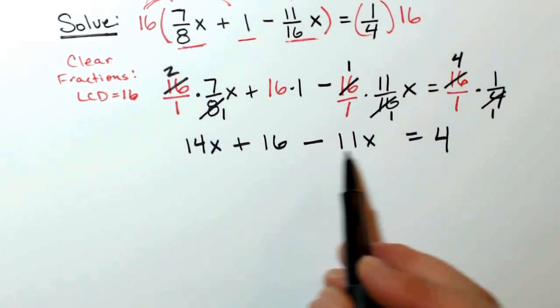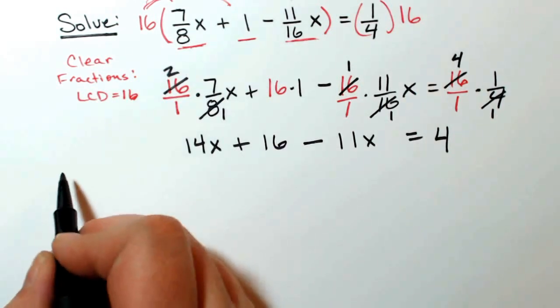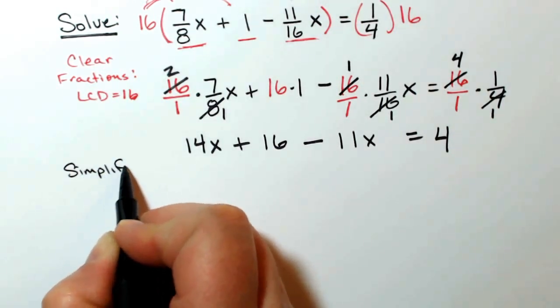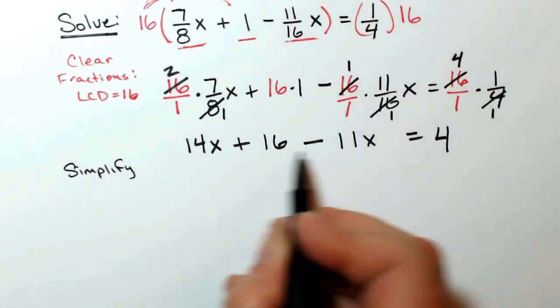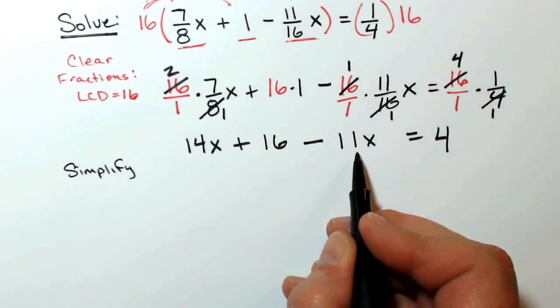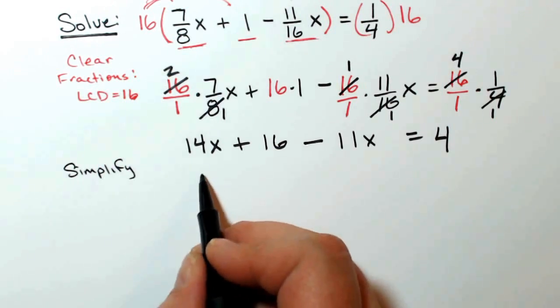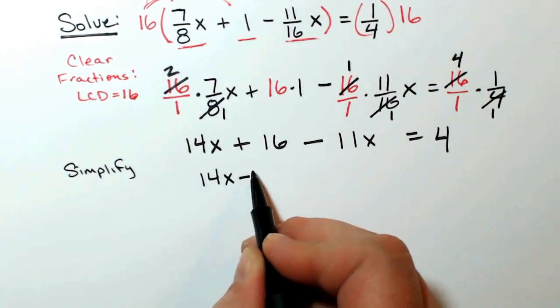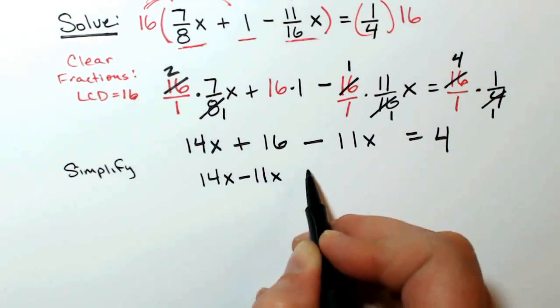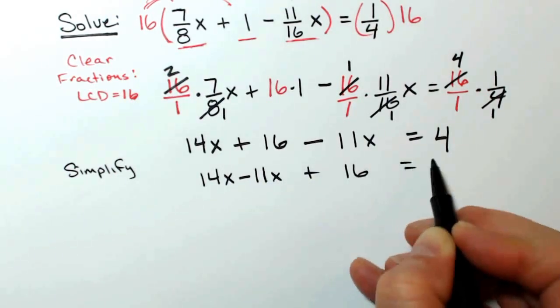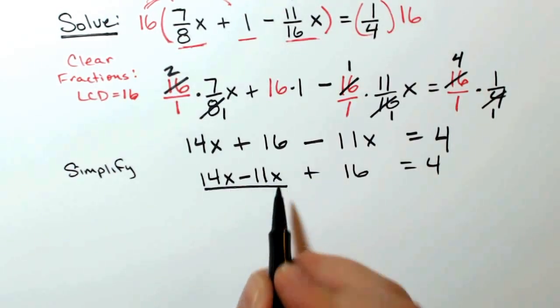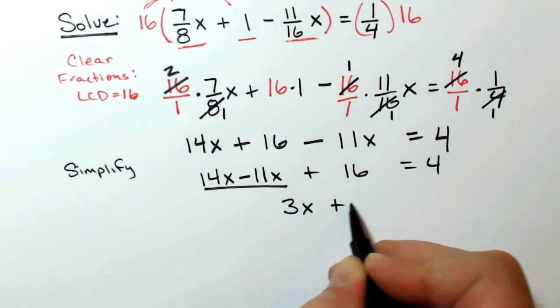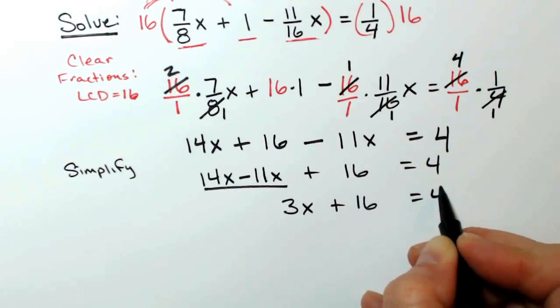My next step now will be to work on solving this equation, so I will simplify the left-hand side of the equation since it has several terms that would be like terms. I could rearrange it if I like, 14x minus 11x plus 16 equals 4, and I have these two like terms, 14x minus 11x gives me 3x plus 16 equals 4.